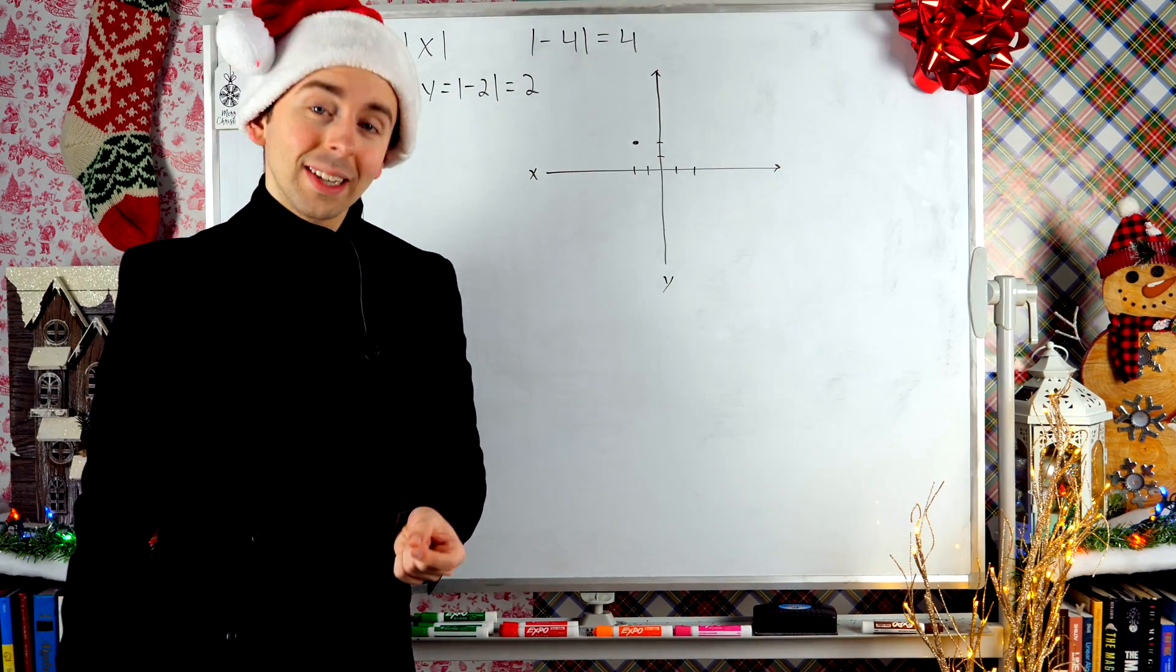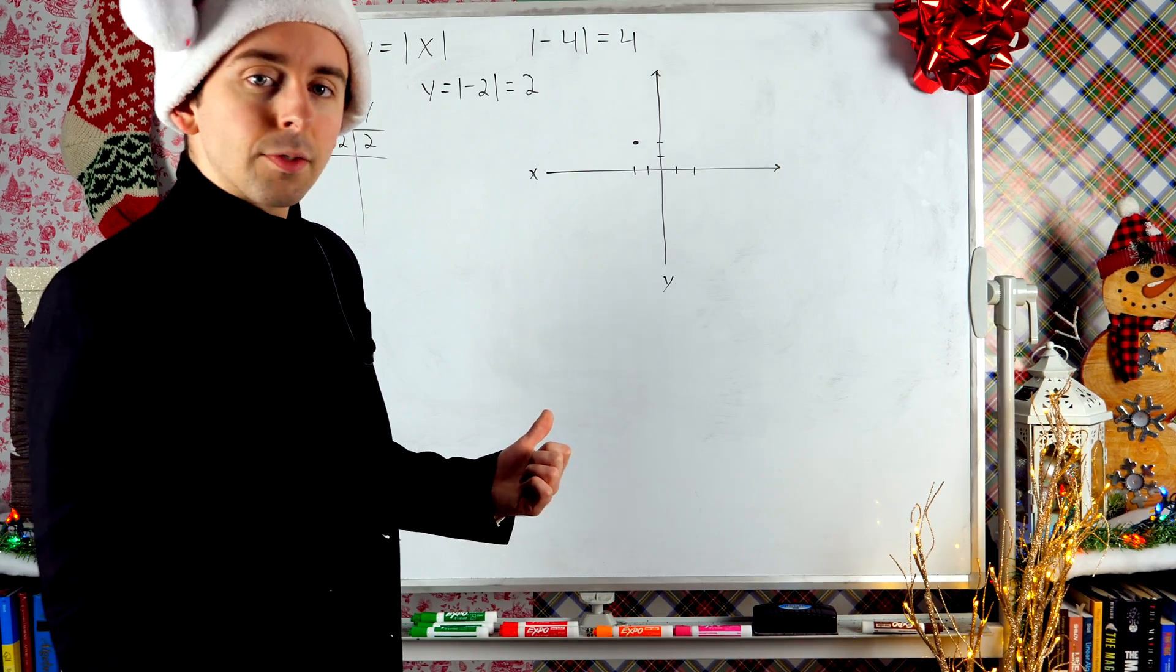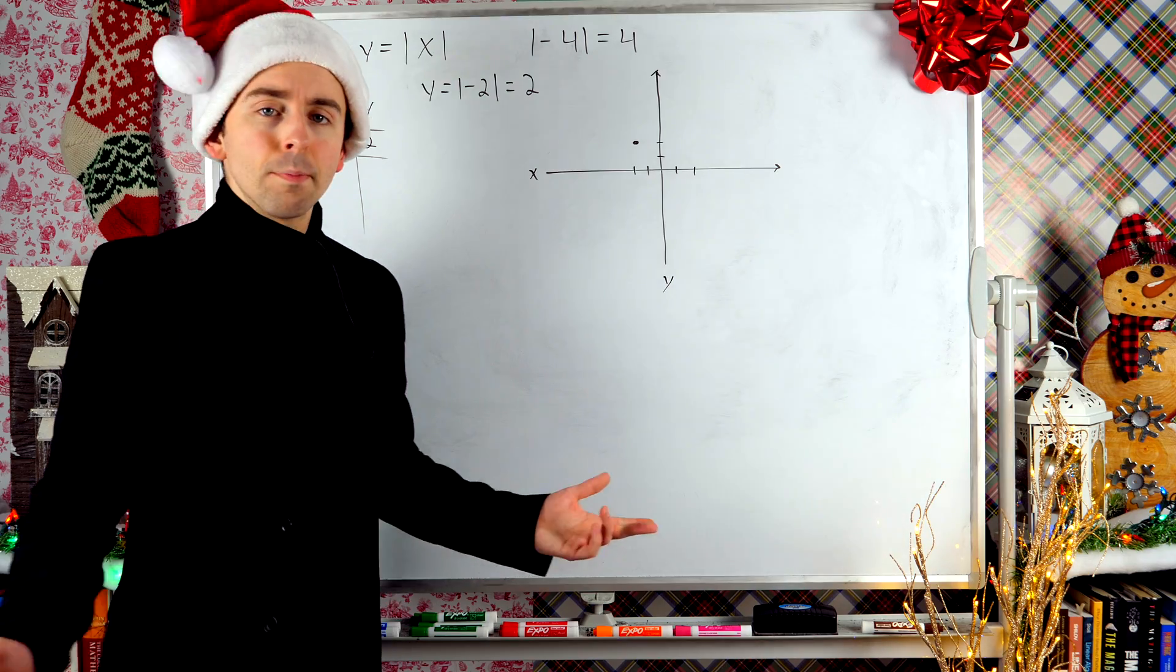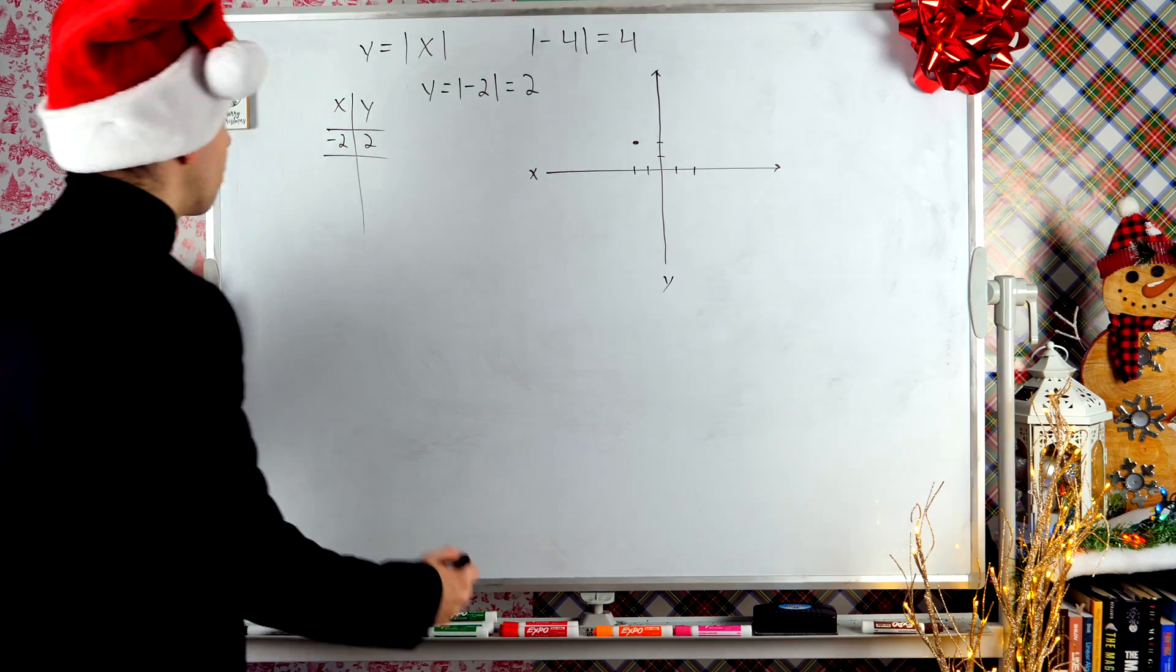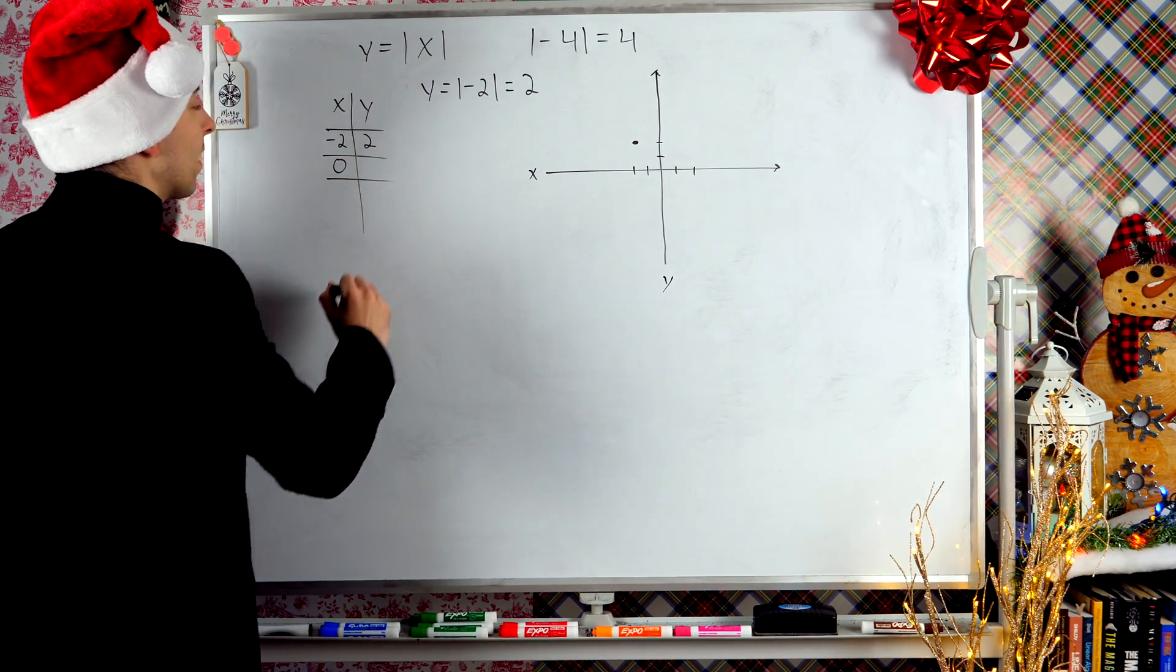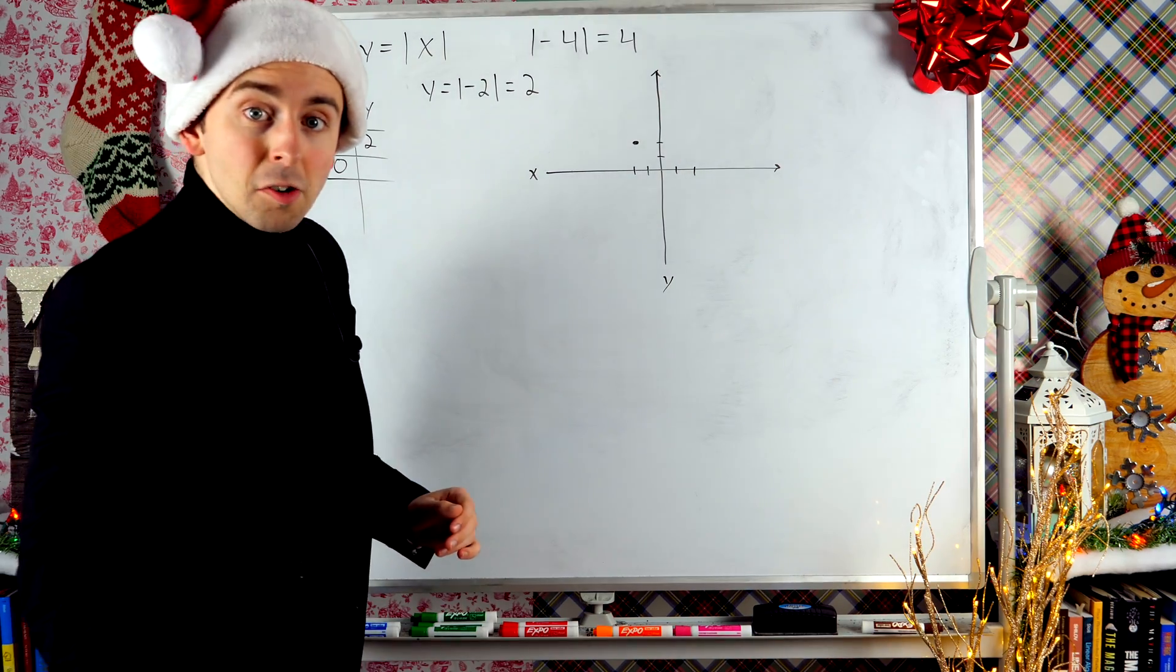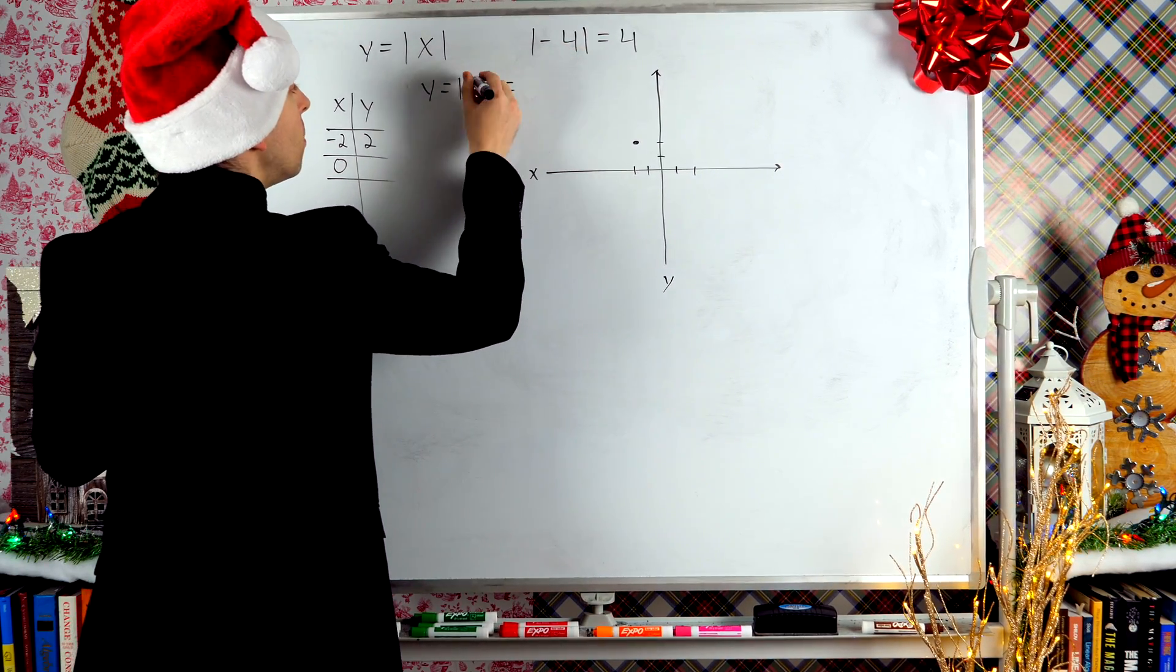One point isn't going to cut it though. I'll need some more. So let's plug in another x value. Again, you can pick whatever you want. Let's say we pick zero. Zero is oftentimes a pretty nice number to work with. So I'll plug in zero for x. If x is zero, y has to be the absolute value of zero.